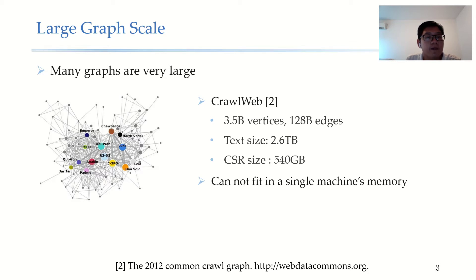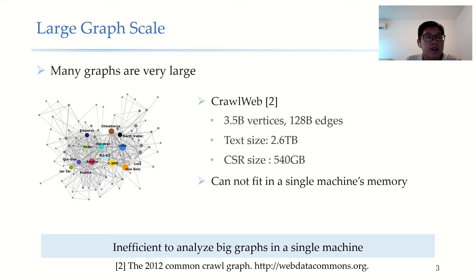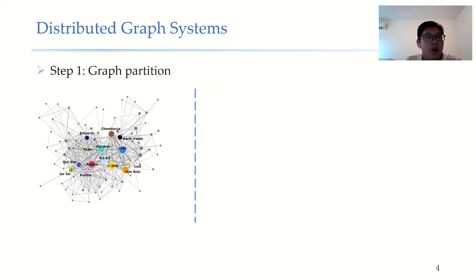This is hard to fit in a single machine's memory, so it is very inefficient to analyze big graphs on a single machine. To deal with this, distributed graph systems based on a cluster of machines are developed to handle large graphs.